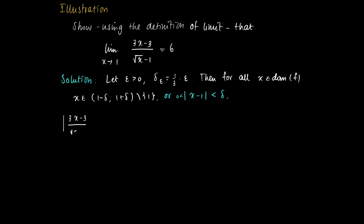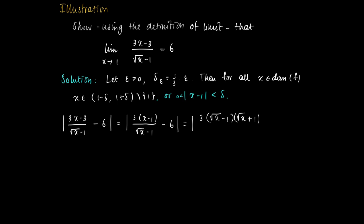We want to show that the function value: 3x minus 3 divided by the square root of x minus 1, minus 6 — the distance of f(x) to 6 — is smaller than epsilon. What we will do is write 3x minus 3 as 3 times (x minus 1) divided by the square root of x minus 1. The square root of x minus 1 is a factor of x minus 1, so we may factorize x minus 1 as the square root of x minus 1 times the square root of x plus 1. This simplifies, under the assumption that x is not equal to 1, to simply the square root of x plus 1.